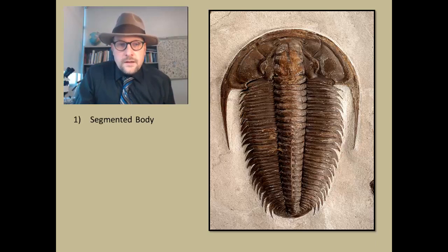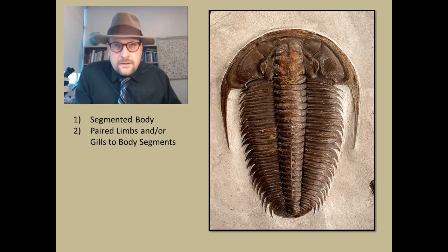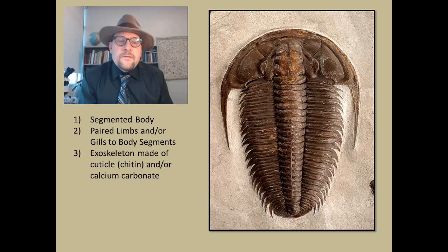These include a segmented body—this is a character shared with annelid worms and appears to be a protosomal character, a very early primitive character for this group of protostomes. They all have paired limbs and/or gills to each body segment. This is the first group that we have looked at that has these paired appendages. Most of the groups are mobile, although some, like barnacles, become sessile.